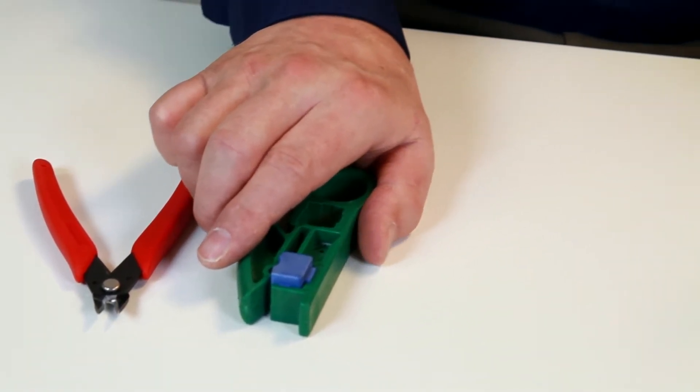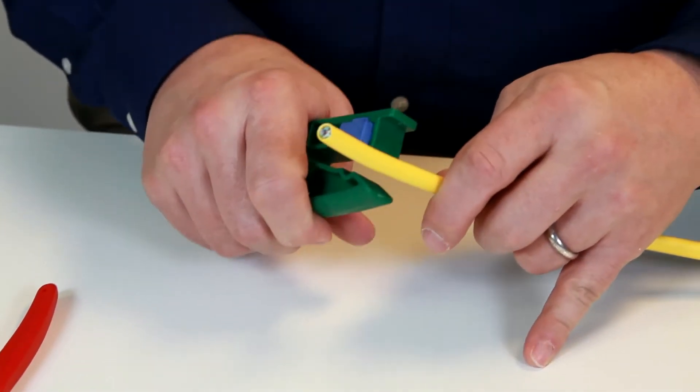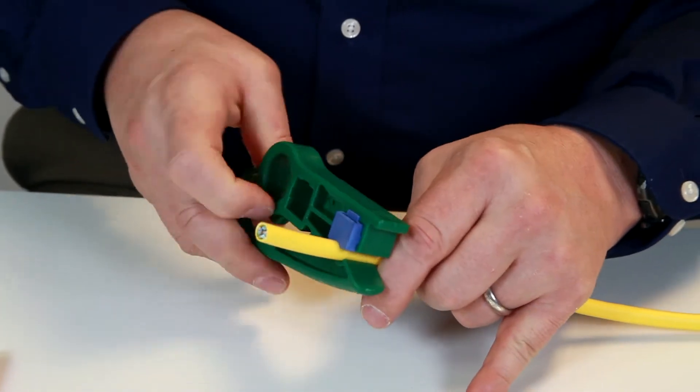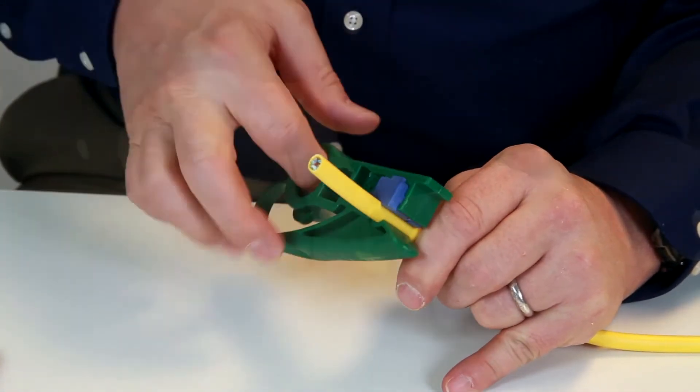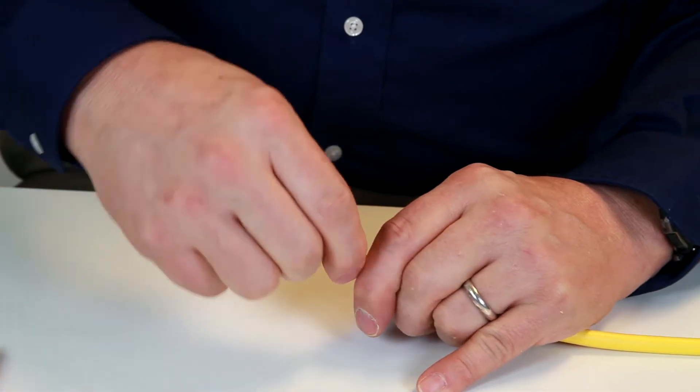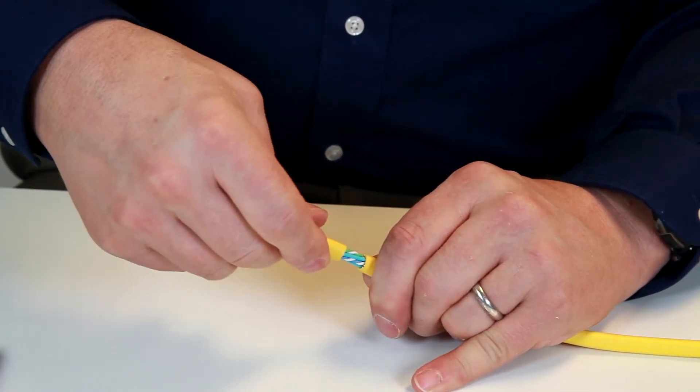I take the cable stripper first and go ahead and strip this cable. Once around we'll do it. Break the cable at the strip point, take the jacket away.